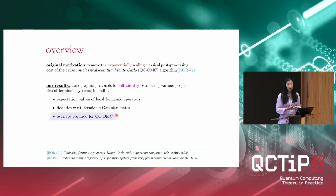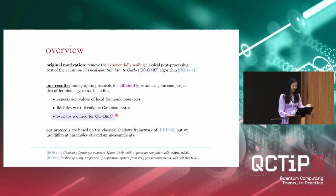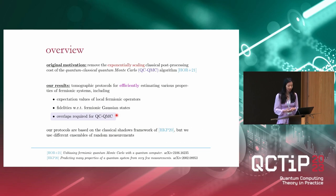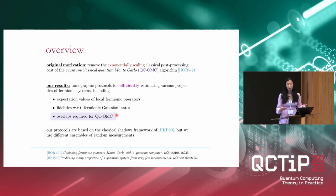In this talk, I'll show you protocols for estimating various classes of fermionic quantities, including but not limited to the overlaps required for QCQMC. Importantly, these protocols are going to be efficient in terms of both quantum and classical resources. Our protocols are still going to be based on the basic framework of classical shadows, but instead of using the Clifford measurements considered by the original shadows paper — which led to the exponentially costly classical post-processing — we're going to consider different measurement ensembles that turn out to work better in our fermionic setting.